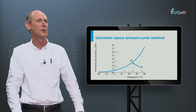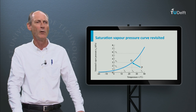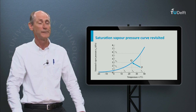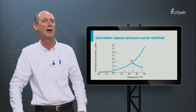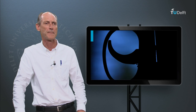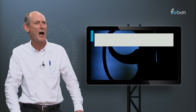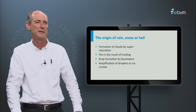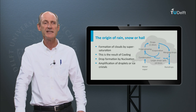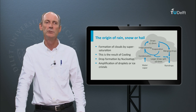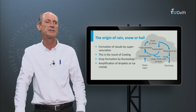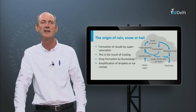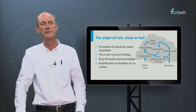But rainfall, snow and hail, as everybody knows, falls from the clouds. How is this process triggered? As in the case of dew, droplet formation is governed by the saturation-pressure curve.